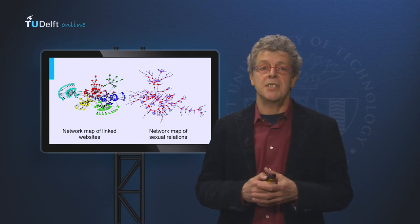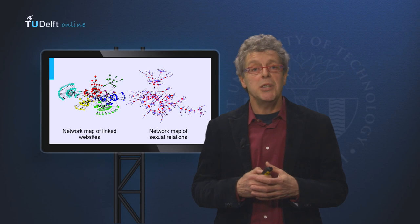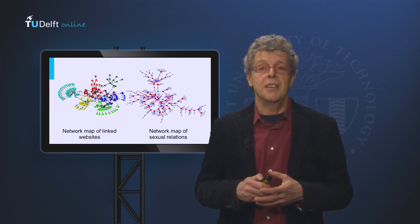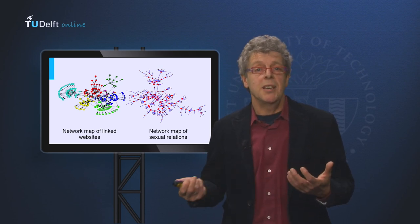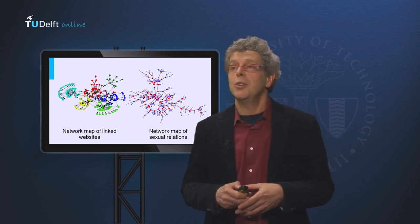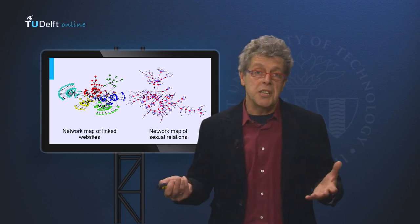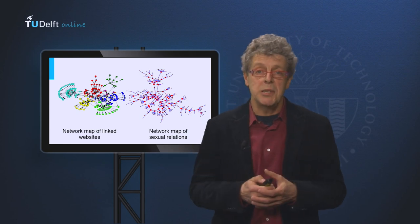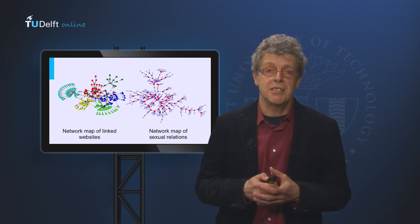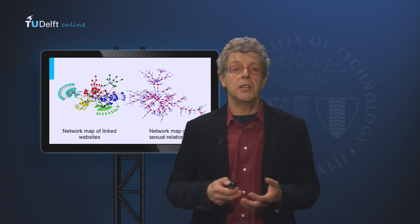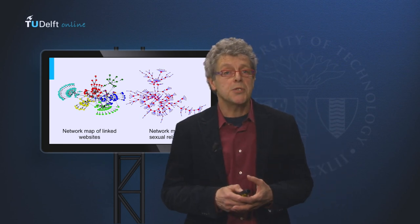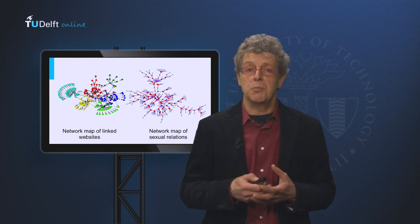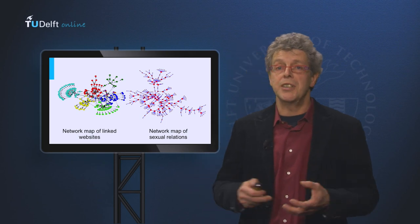These kinds of maps can be of interest for policy making. You might map who are involved in the offshore industry, who are influencing the European banking crisis, or determine which persons are most influential in the various boards of supervisory directors.